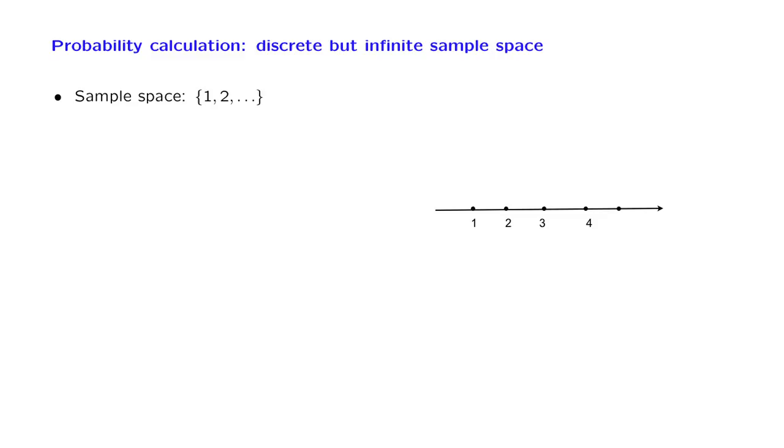But instead, I will just tell you the probability of events that contain a single element. I'm going to tell you that there is probability 1 over 2 to the n, that the outcome is equal to n.